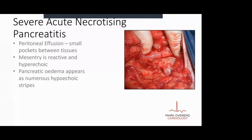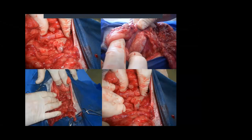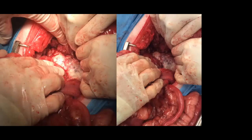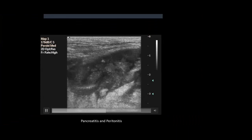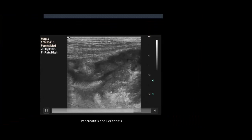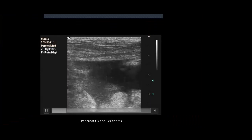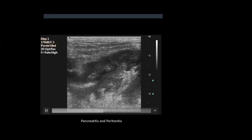We also see cases of severe acute necrotizing pancreatitis - these look like this and tend to have an effusion around them. It's a more severe version with much sicker patients. The mesentery is very reactive and hyperechoic, and you get pancreatic edema as numerous hypoechoic stripes. Here we have some free fluid around the abdomen, and you can see the pancreas just coming in here - free fluid around it. This is a nasty, horrible severe acute pancreatitis.